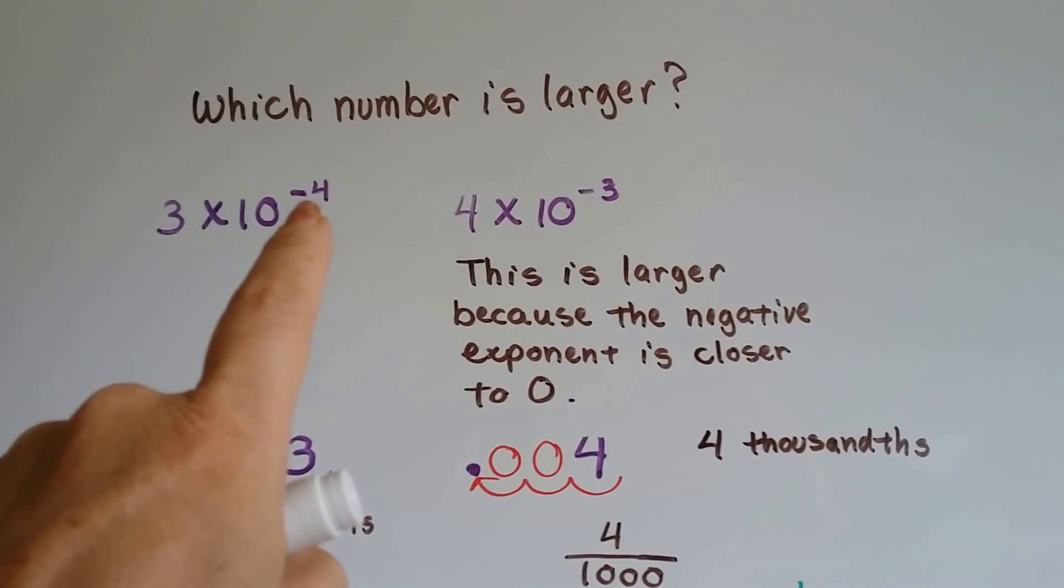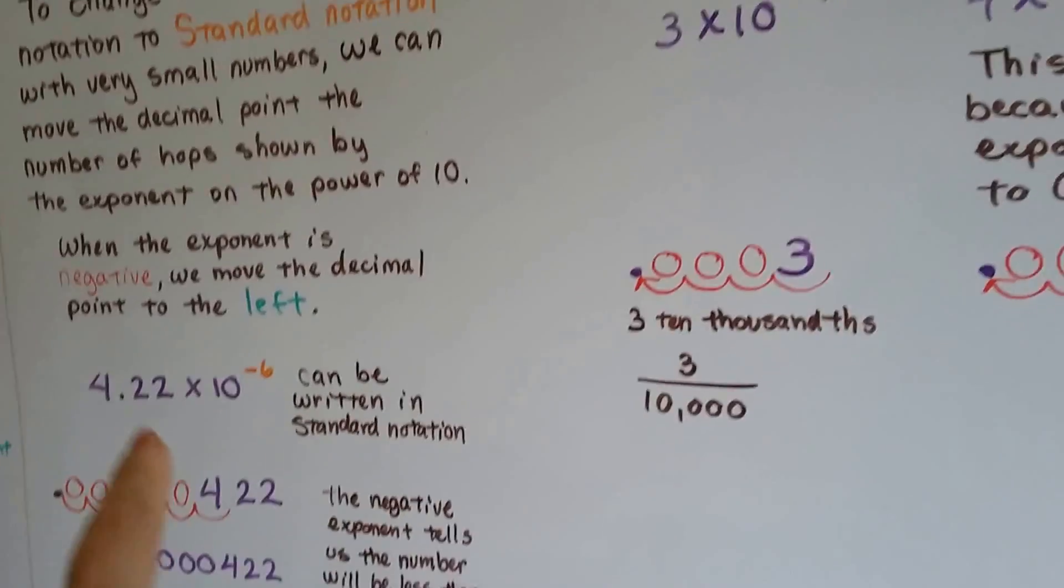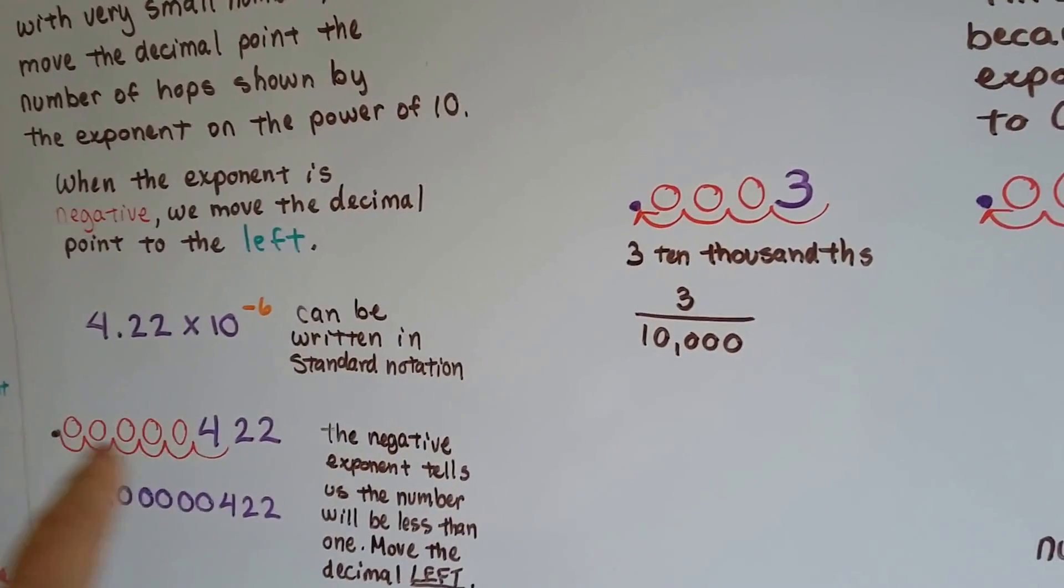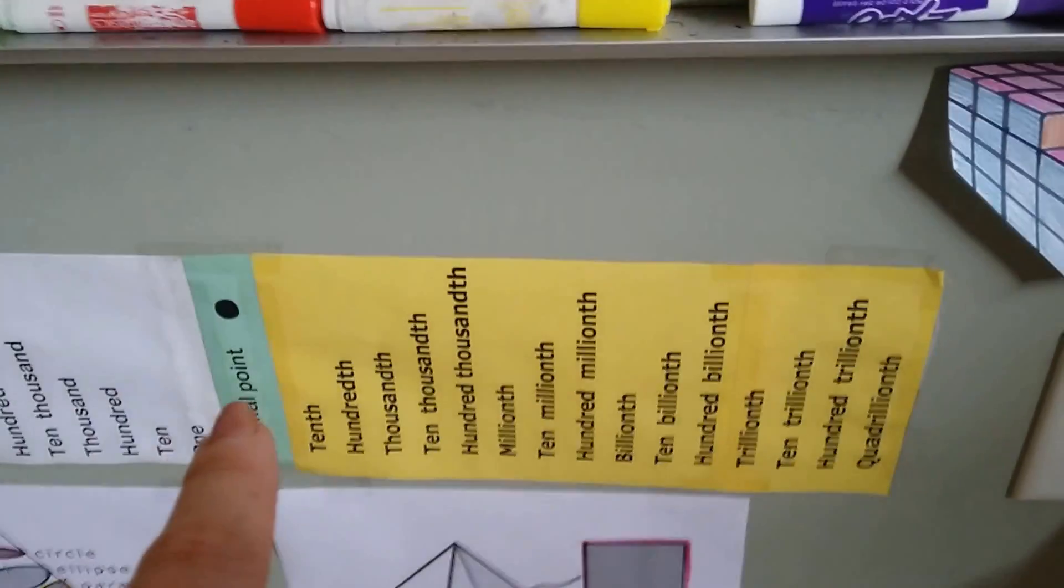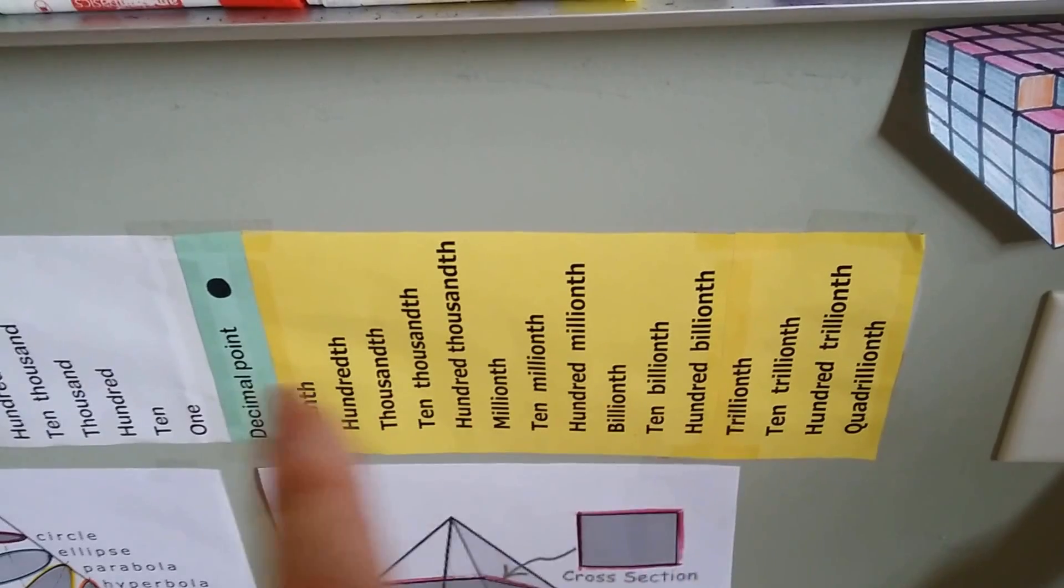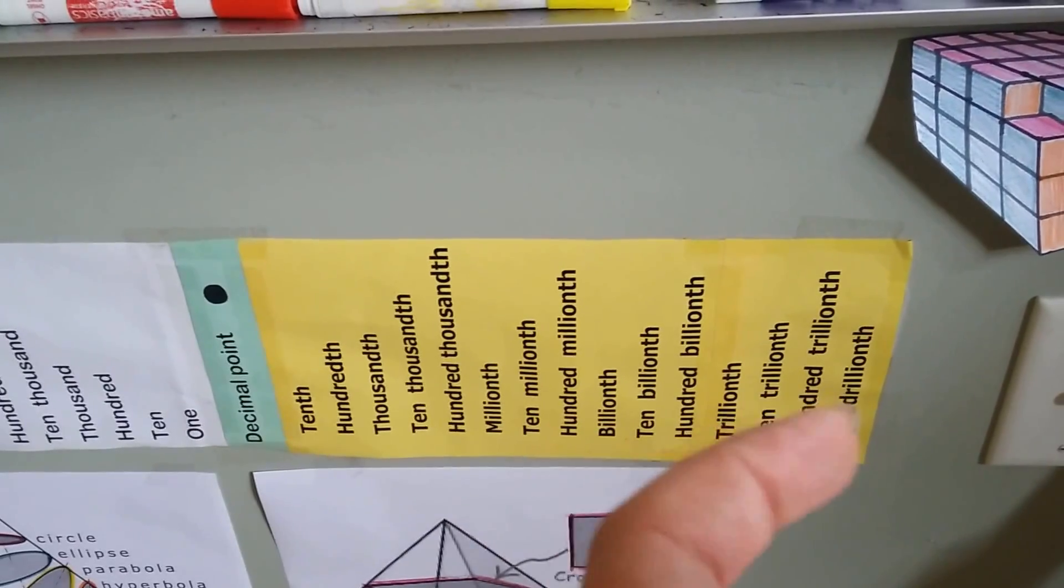The bigger that negative exponent becomes—negative 5, negative 6, negative 7—the more zeros we're going to be adding. And that means this decimal number is going to get smaller and smaller and smaller, and we're going to get past the decimal point into the millions and billions and trillions, and it's going to slowly get more and more this way into tinier and tinier numbers.